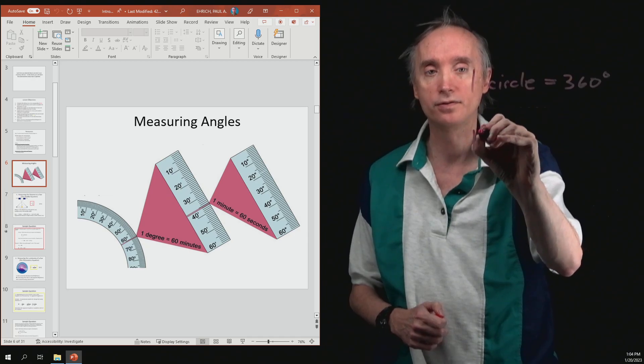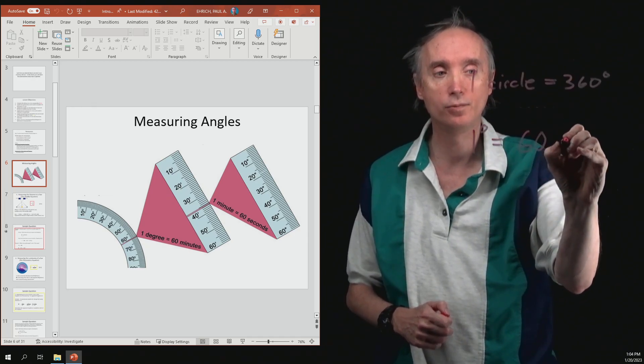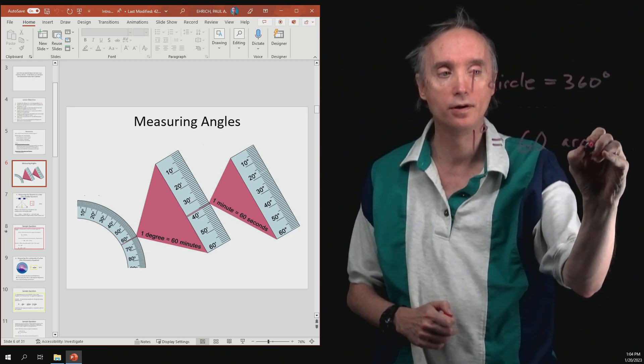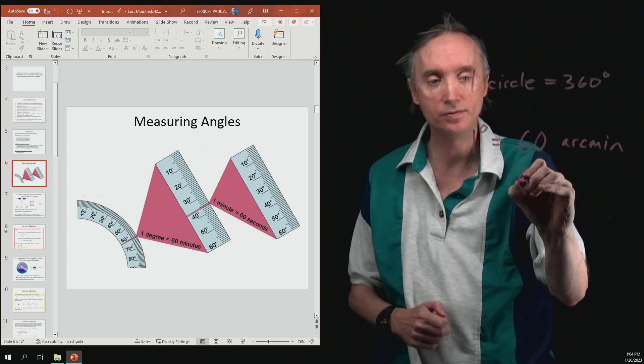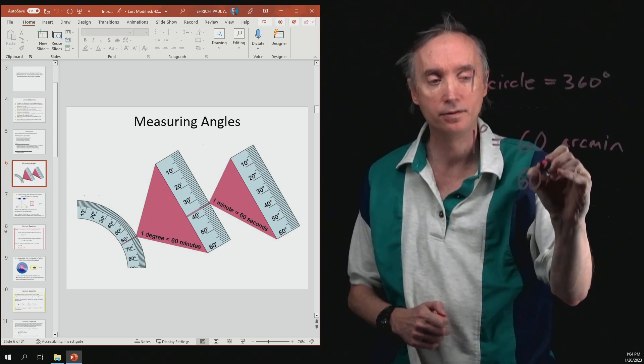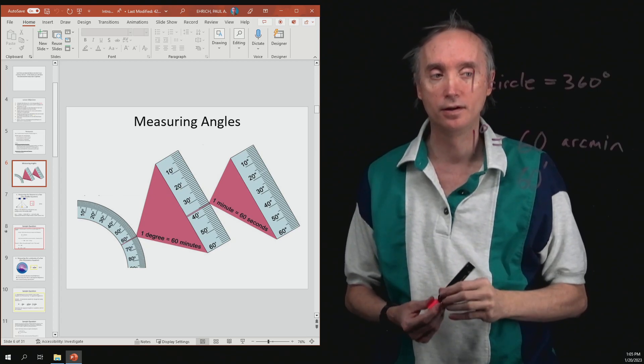So 1 degree has in it 60, and then we could write the word arc minute, or a shorthand way would be 60 and then a tick mark. So that stands for 60 arc minutes.